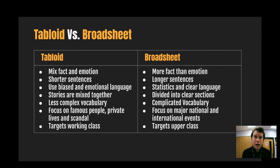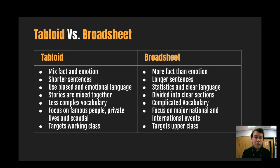Some further differences to discuss. A tabloid will perhaps have a mix between fact and emotion. There will be shorter sentences and perhaps use bias in the mode of language. Stories are mixed together, perhaps often on the same page, certainly further into the tabloid.